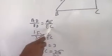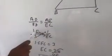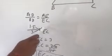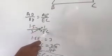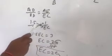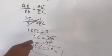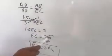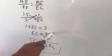AD equal to 1.5, BD equal to 3, equals AE equal to 1 upon EC. By cross multiplication, 1.5 EC equal to 3. EC equal to 3 upon 1.5. Removing the decimal point, 15 into 30.